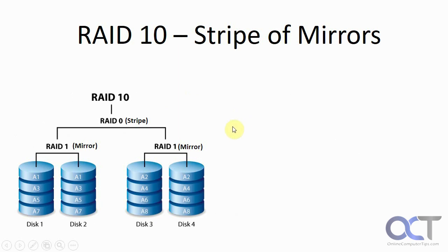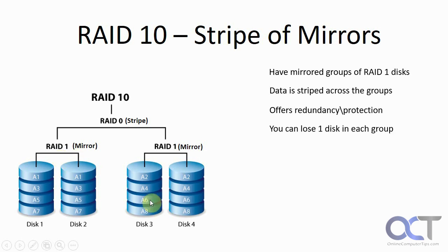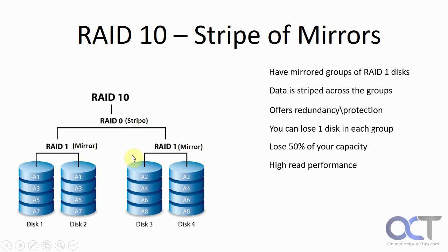The last hybrid RAID level is RAID 10, which is a stripe of mirrors. In this one you have groups that are mirrored like normal RAID 1 sets, and then you stripe the data across the RAID 1 groups for performance. Just like the others, you get redundancy and protection, and you could lose one disk in each group. Just like RAID 0 plus 1, you lose 50% of your capacity. You get high read performance from the striping across multiple disks, and decent write performance since it has to write to multiple disks. You need a minimum of four disks.